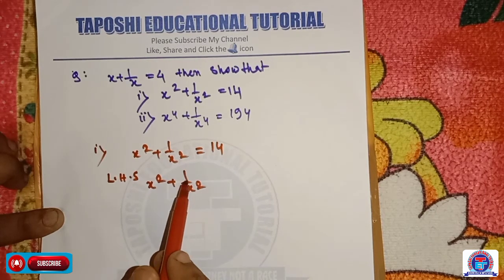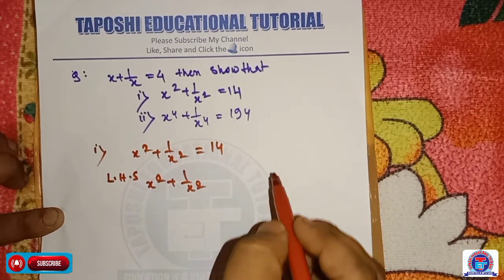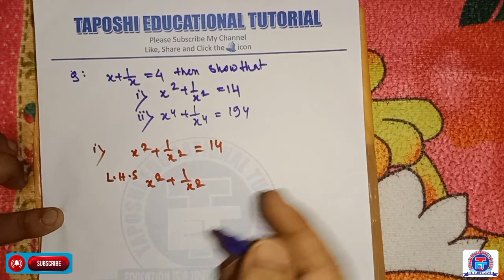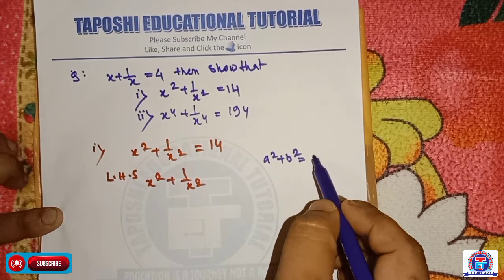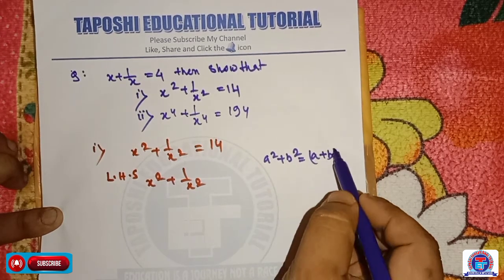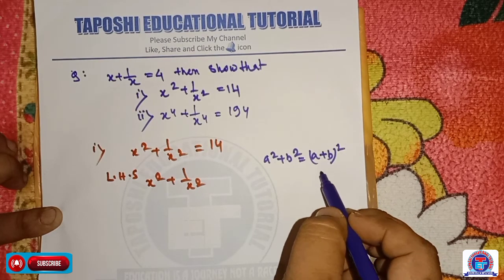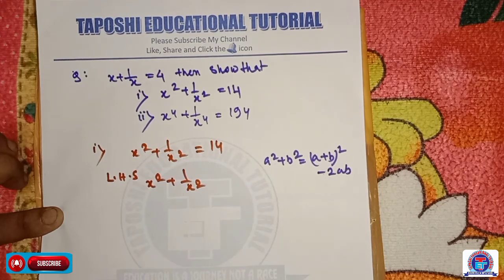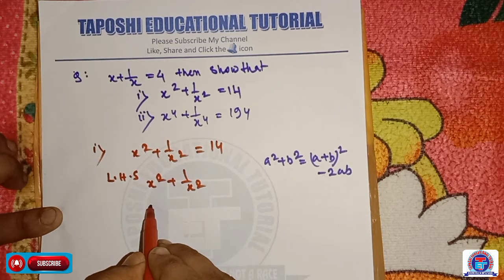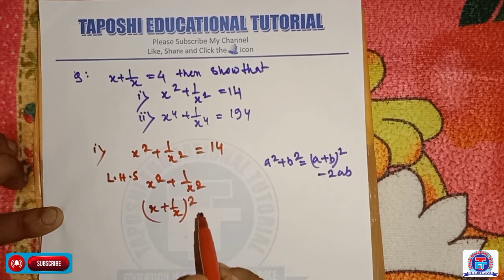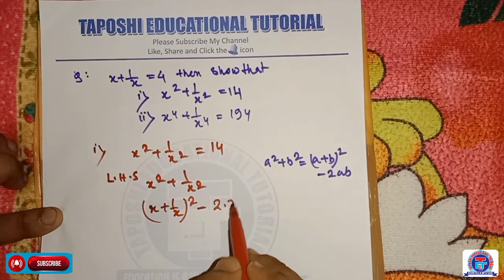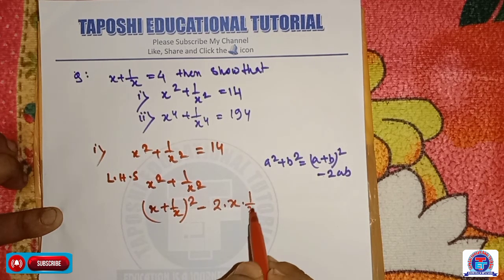We use the a square plus b square formula, which is a plus b its whole square minus 2ab. So we write x plus 1 by x its whole square minus 2 into x into 1 by x.